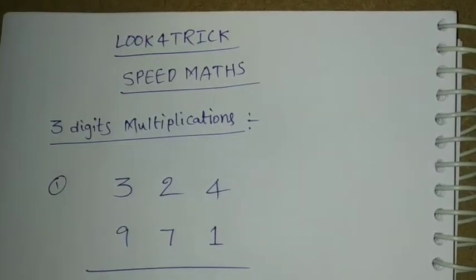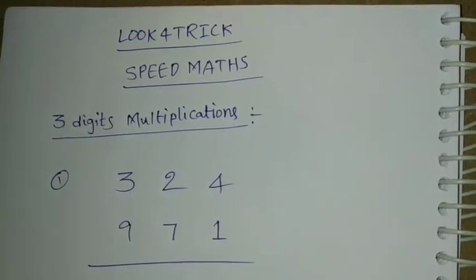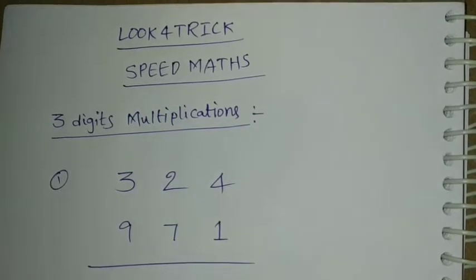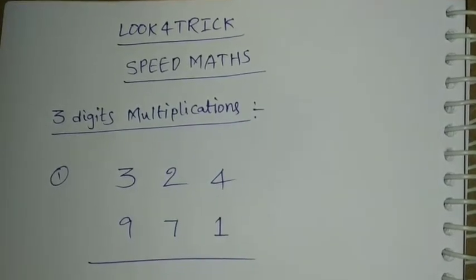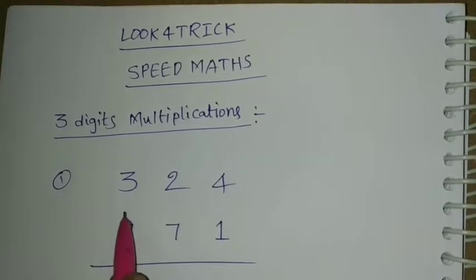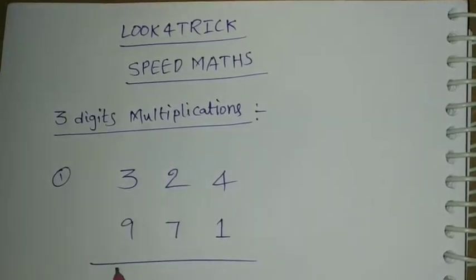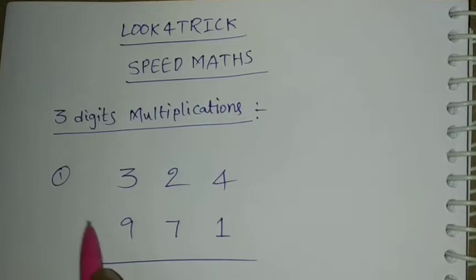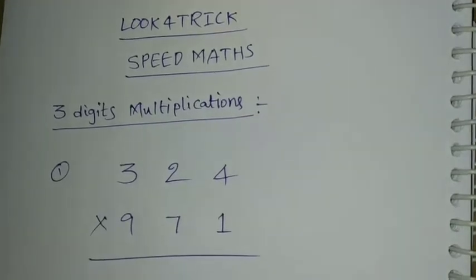Hi friends, welcome to Look4Trick channel. Here is speed maths 3 digits multiplication, easy to multiply. Problem is 324 multiply with 971.